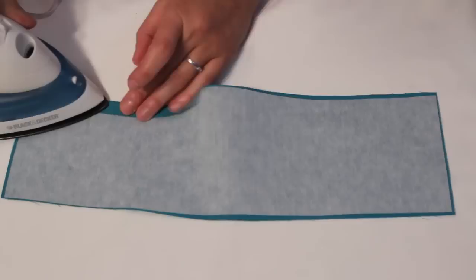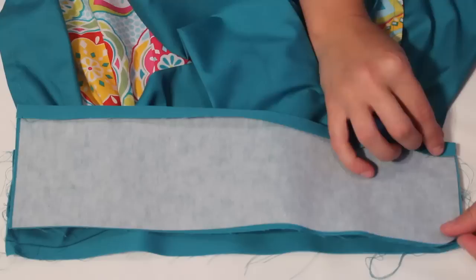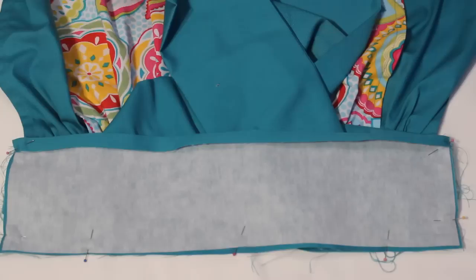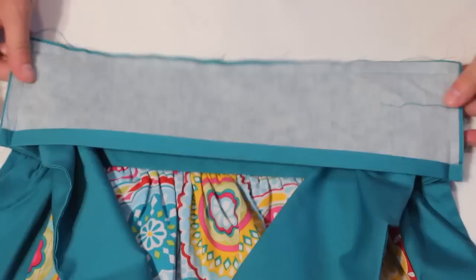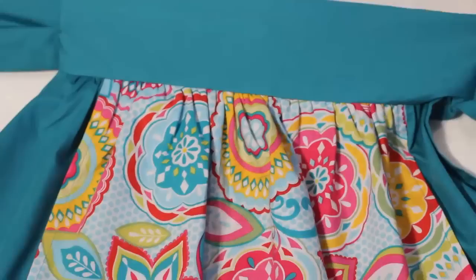With the last waistband piece, fold back a half inch on one long side and iron. With the ties down toward the center, place the waistband on top right sides together. Pin the three non-folded sides and sew to attach with a half inch seam allowance. Trim the corners and flip right sides out.